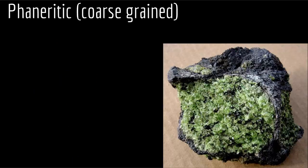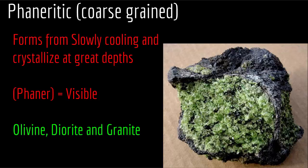Another igneous texture is phaneritic, or coarse-grained, texture. These igneous rocks have crystals that are clearly visible. These rocks crystallize slowly — sometimes over millions of years — below the Earth's surface, and are also referred to as plutonic or intrusive. Magma cooling slowly over a long period of time forms large crystals. Examples of phaneritic texture include olivine, diorite, and granite. As you can see, the green crystals here are olivine, and they are large because they cooled over a very long period of time.